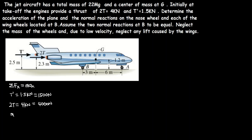The mass of the plane is given as 22 megagrams. This is equal to 22 times 10 to the power 6 grams. Converting to kilograms by multiplying by 10 to the power minus 3, we get a mass of 22 times 10 to the power 3 kilograms, which is 22,000 kilograms.